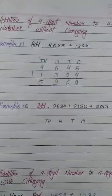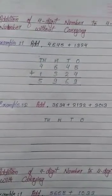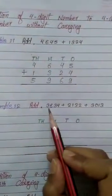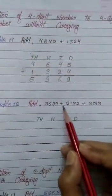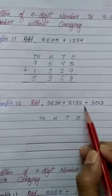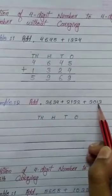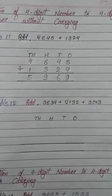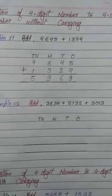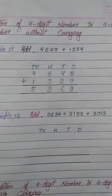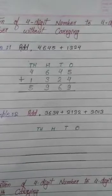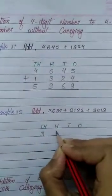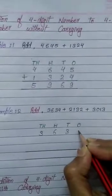Now, second example. In this example, we have to add 3 numbers of 4 digits: 3,634 plus 2,132 plus 3,013. We can add 3 four-digit numbers in a similar way. First, put them in their place values. 3,634 is 3 thousands, 6 hundreds, 3 tens and 4 ones.